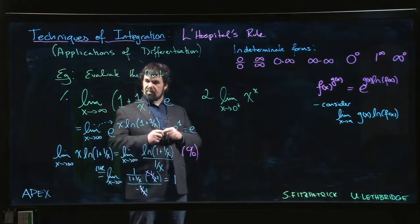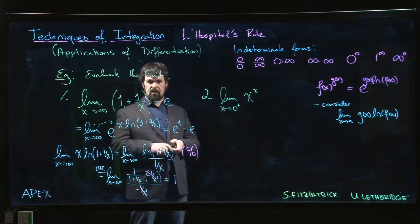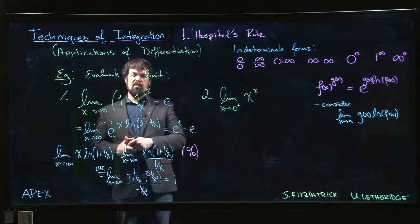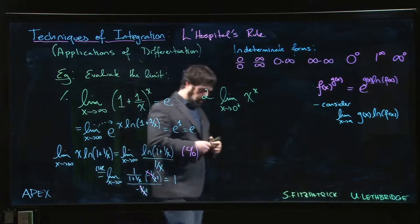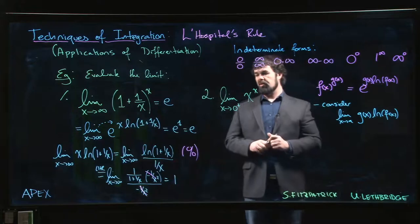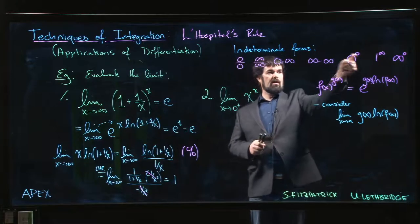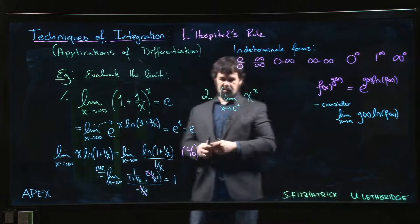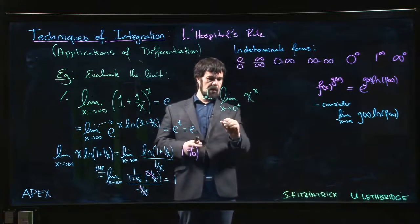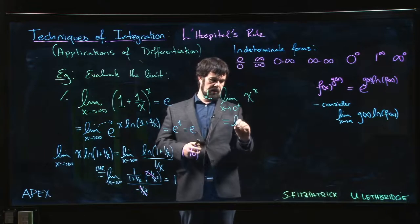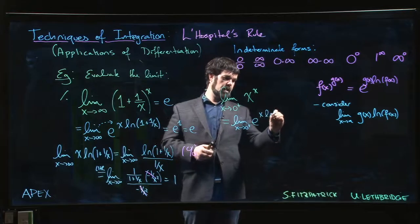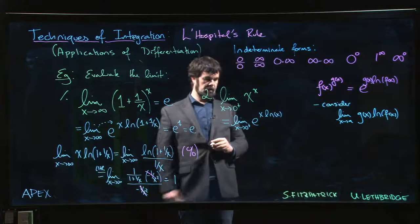So this limit is e. In fact, you'll occasionally see textbooks give this as a definition of e: e is the number given by this limit. Moving to the second example — x to the power x as x goes to zero from the right — this is clearly a zero to the zero form.